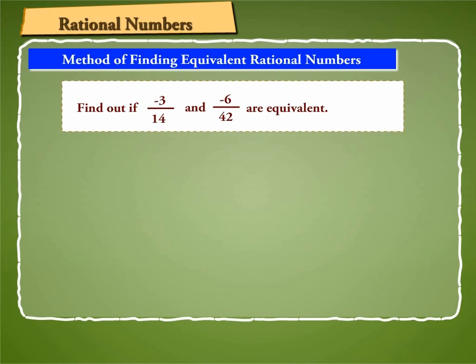We use the method of cross-multiplication. Multiply minus 3 by 42 and 14 by minus 6, we get minus 126 and minus 84. But minus 126 is not equal to minus 84. So we can say that minus 3 by 14 is not equal to minus 6 by 42, or they are not equivalent.